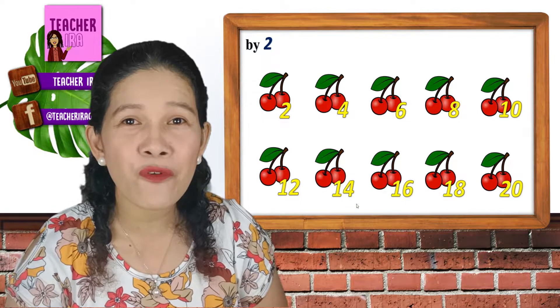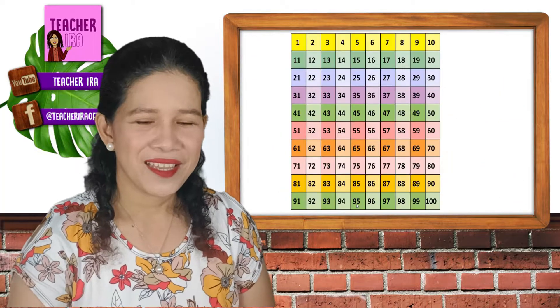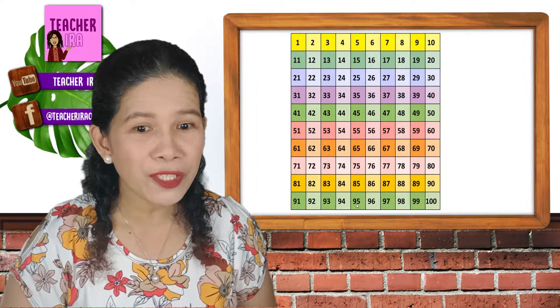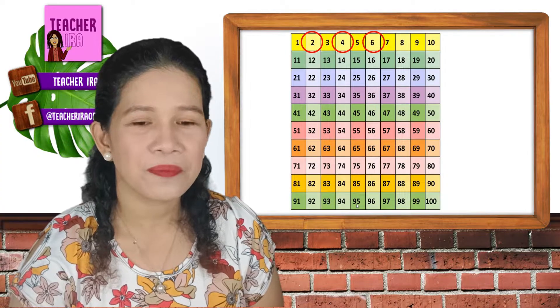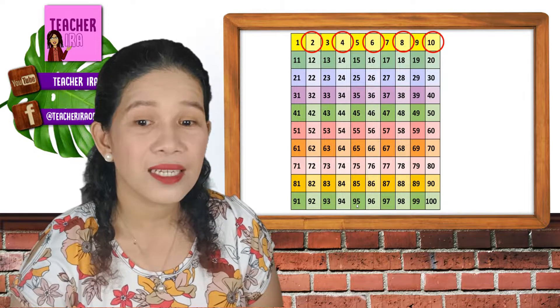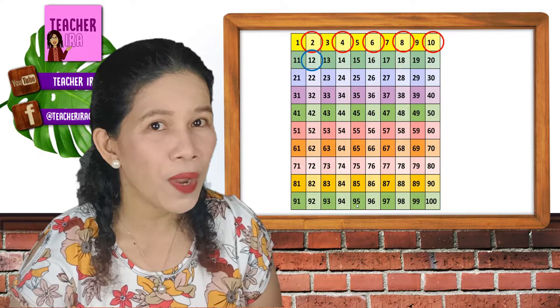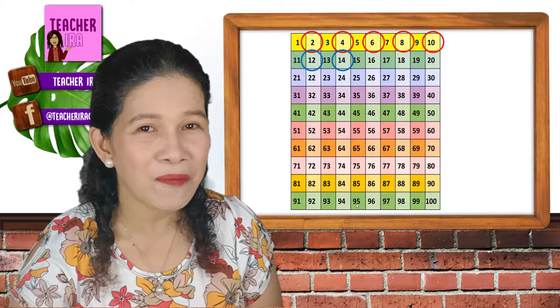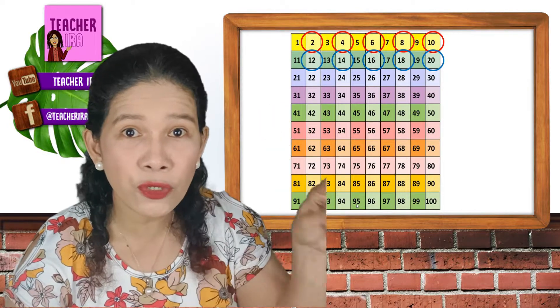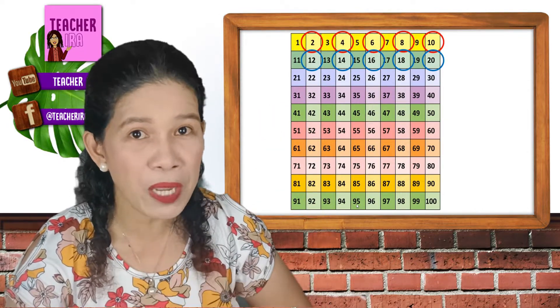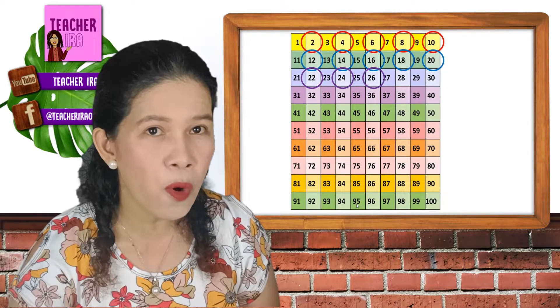Now let's try with more numbers here in the chart. I have the numbers 1 to 100. This time I'll show you that we are going to skip 1 number. Let's go. 2, 4, 6, 8, 10, 12, 14. See? I'm skipping 1. 16, 18. We will not say the 19, of course. We will say 20. And we can continue and go on with bigger numbers. 22, 24, 26, 28, 30.